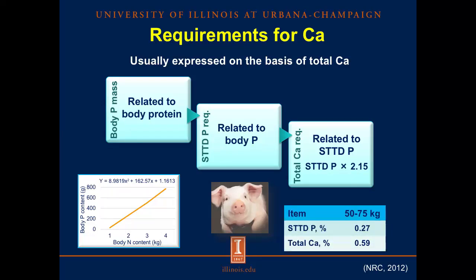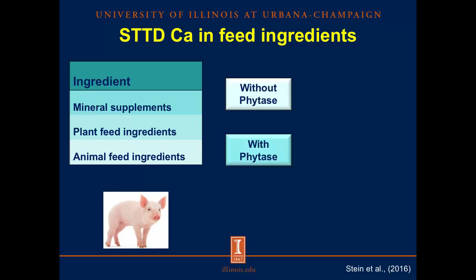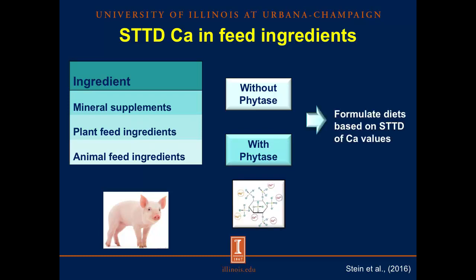So in pigs from 50 to 75 kg, the digestible phosphorus requirement is 0.27% and the total calcium requirement is 0.59%. However, it was stated in the NRC that requirements for calcium should be expressed as digestible calcium, but due to a lack of data that wasn't possible. But recent research has provided values for standardized total tract digestible calcium in different feed ingredients using diets without phytase and with phytase, and this is important because of the relationship between calcium and phytase.